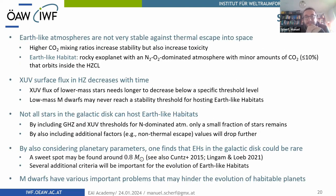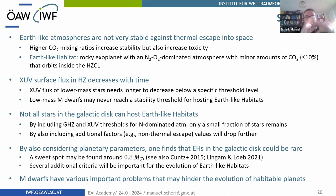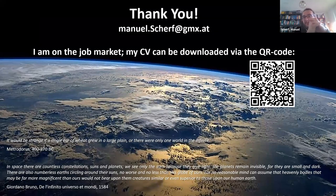In summary: Earth-like atmospheres are not very stable against thermal escape to space, with higher CO2 mixing ratios increasing stability — and on this we based our definition of Earth-like habitats. XUV surface flux in the habitable zone decreases over time, taking longer for lower-mass stars to fall below the stability threshold, meaning low-mass M-dwarfs may never allow Earth-like atmospheres to evolve. Therefore, not all stars in the galactic disk can host Earth-like habitats. Stars with stellar masses around 0.8 solar masses may be the most favorable hosts for Earth-like habitats.